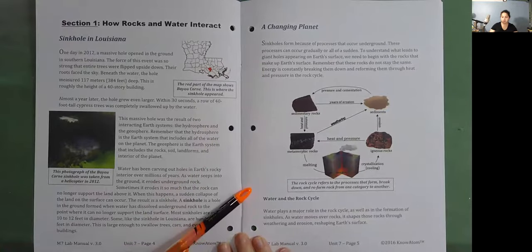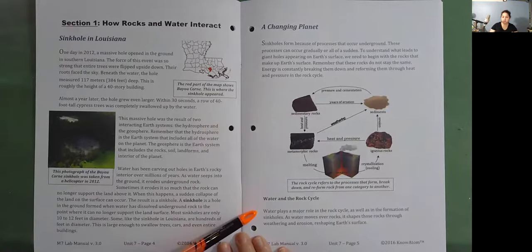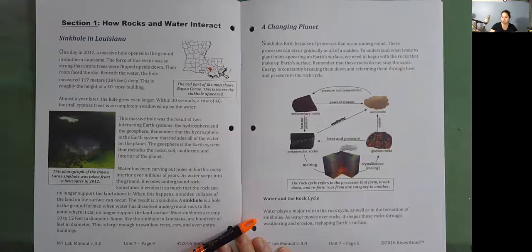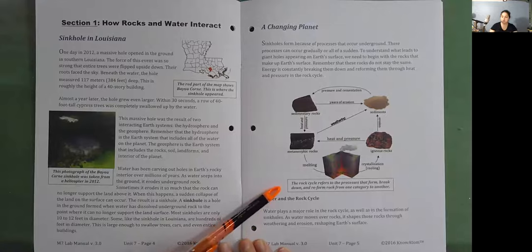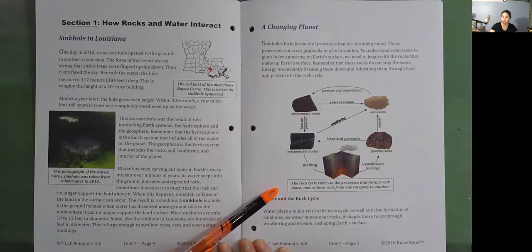Water and the rock cycle. Water plays a major role in the rock cycle, as well as in the formation of sinkholes. As water moves over rocks, it shapes those rocks through weathering and erosion, reshaping Earth's surface. The rock cycle refers to the processes that form, break down, and reform rock from one category to another.